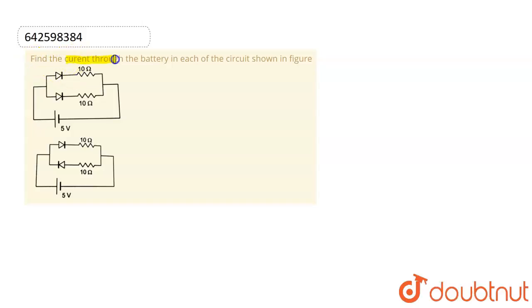is find the current through the battery in each of the circuit shown in the figure. Circuit one is in this particular circuit and circuit two is this particular circuit. So let me consider the first circuit.